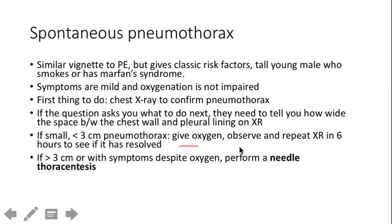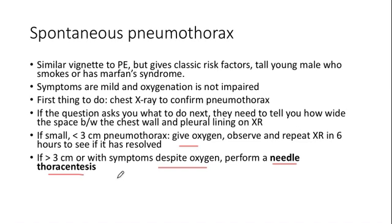But if the pneumothorax is larger — greater than three centimeters — and more importantly on the shelf, if they're still having symptoms despite oxygen, that's someone who needs needle thoracentesis. This is different from the thoracentesis done for a pleural effusion. Here you insert the needle where the free air is to aspirate air and help the lung re-expand faster. You only do this if symptoms persist despite oxygen. Note that we're not giving these patients a chest tube — that's too aggressive for this mild illness.